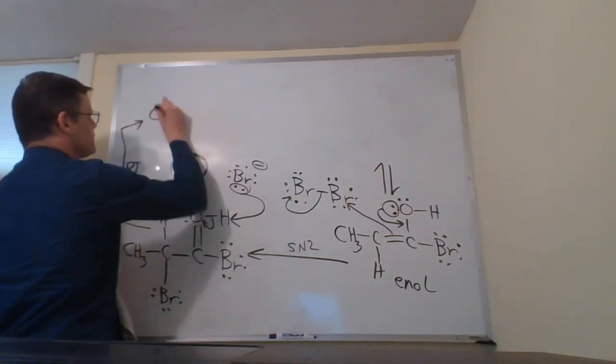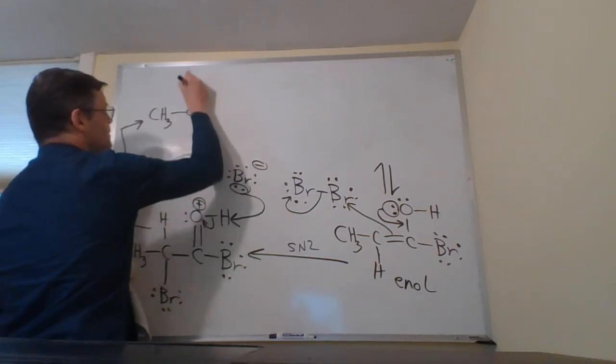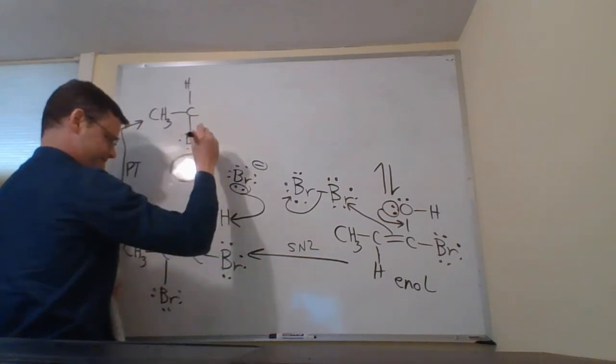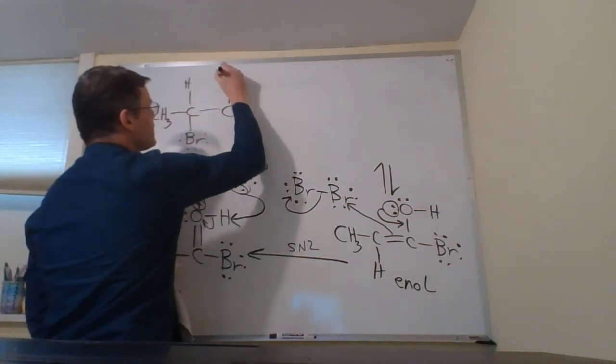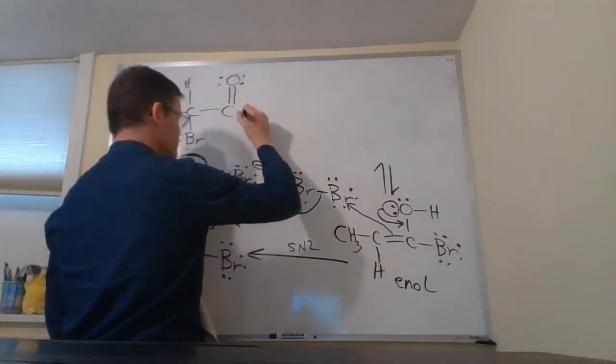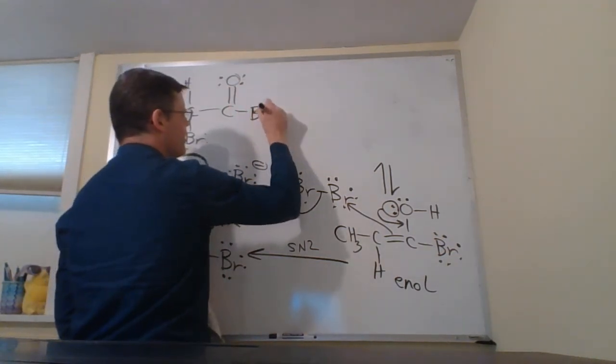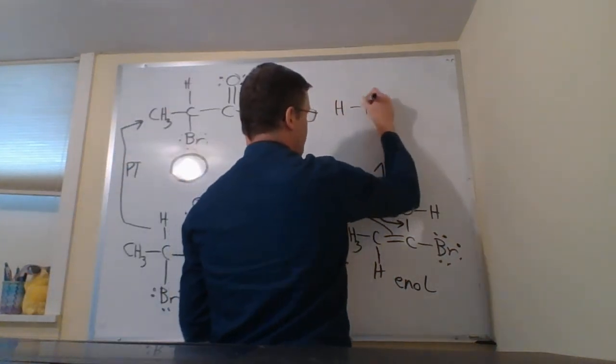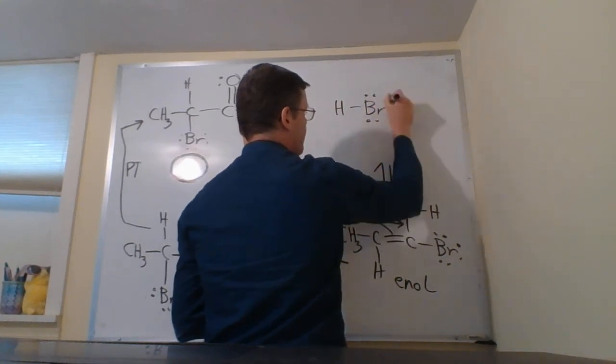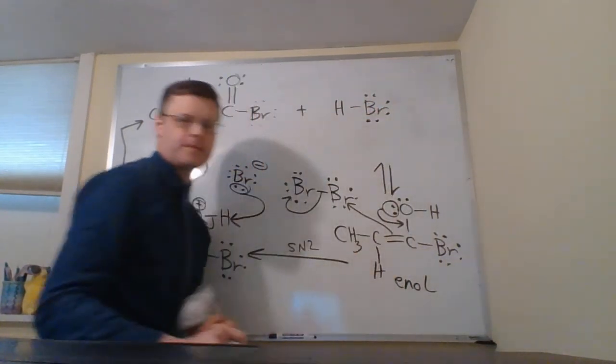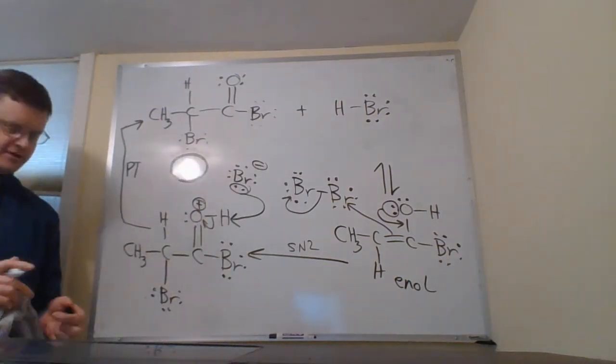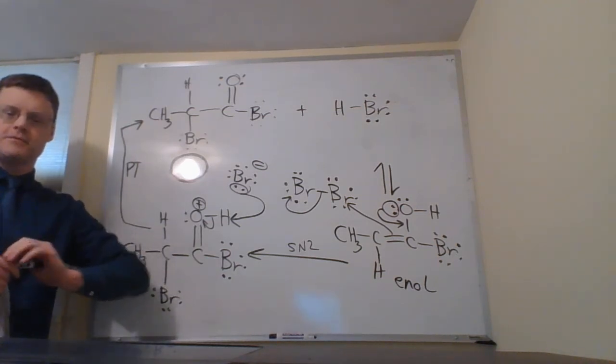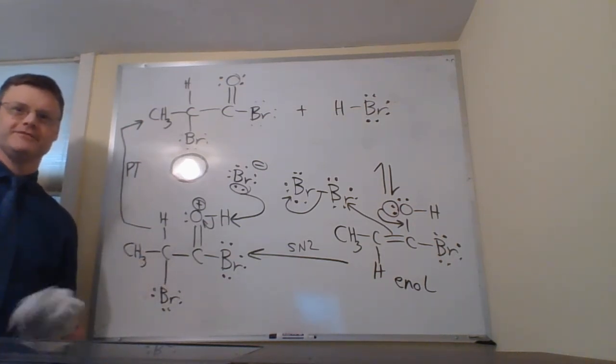All right, so CH3C, got an H there, we got a BR here, out of that oxygen, BR, plus HBr. And that's going to conclude this lecture on alpha bromination of a carboxylic acid, or the HVZ reaction.